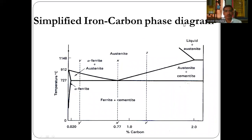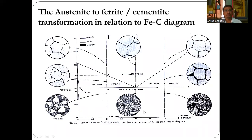The simplified iron-carbon equilibrium phase diagram shows percentage of carbon on the x-axis and temperature on the y-axis. The phases present are: alpha ferrite, austenite, liquid plus austenite, austenite plus cementite, and ferrite plus cementite. The austenite-to-ferrite or cementite transformation is shown in relation to the Fe3C diagram, along with microstructures of ferrite, ferrite plus cementite, cementite, and mixed ferrite plus cementite.